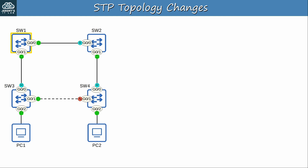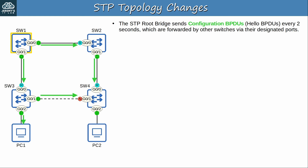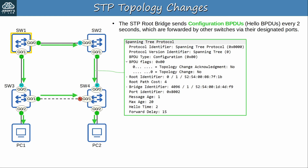This is the topology we'll use for this video — switch 1 is the root bridge. As you know, the STP root bridge sends configuration BPDUs, also known as hello BPDUs, every 2 seconds, which are forwarded by other switches via their designated ports. Here's a packet capture of a BPDU switch 2 forwarded to switch 4. This is a configuration BPDU — the regular kind sent by the root bridge every hello interval. There are no flags here. There are two types of flags: topology change acknowledgement and topology change. We'll see how those work soon.